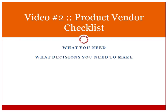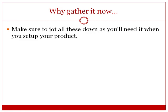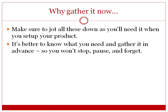Hello and welcome to video number two: product vendor checklist. We're going to talk about what you need and what decisions you need to make. Why gather it now? Make sure to jot all these down as you're going to need them when you set up the product. It's better to know what you need beforehand so you don't stop, pause, and forget. My goal is to get your product onto JVZoo, and I've created this video course to be as easy as possible so you're able to do that.